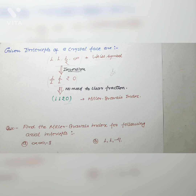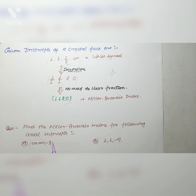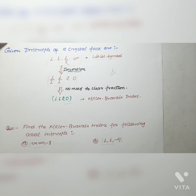Here are two unsolved problems. The axial intercepts given are: infinite, infinite, -3 and 1, 1, -4. You have to calculate the Miller-Bravais indices for these axial intercepts. Please solve these problems and let me know in the comment section what the Miller indices will be.